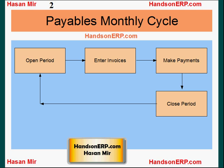So this is what happens in a payables department on a periodic basis: they open a period. Before they can do any activity in a particular period, that period has to be opened. Once the period is opened, you perform all the transactions in that period. Once all the transactions and activity have taken place, then the period is closed.